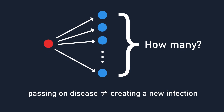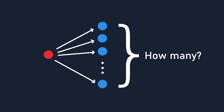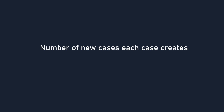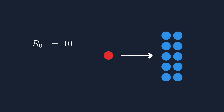This value is known as the basic reproduction number, and is represented by R-naught. Note though, that passing the disease to someone is not the same as creating a new infection, because that person might already be infected, in which case they wouldn't become a new case. The number of new cases each infected person creates can be found by multiplying R-naught by the proportion of people who are still susceptible, represented by S. For example, if you are infectious with an R-naught value of 10, but only 40% of the population is still susceptible, then on average, out of those 10 people, only 4 will actually become new infections.